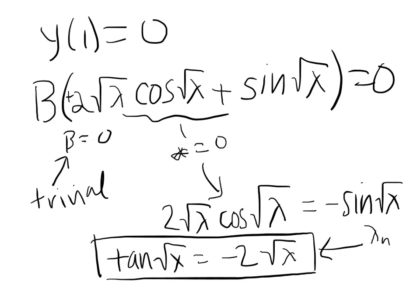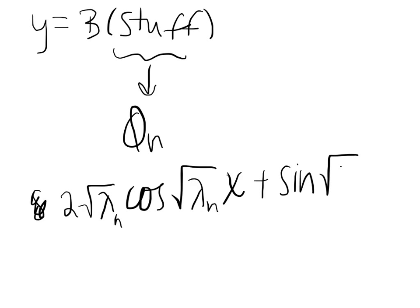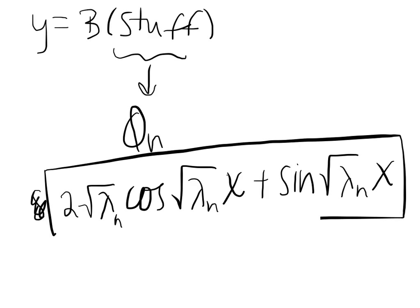So λ_n satisfies that condition. The second part is finding the eigenfunctions, which are really easy after this. We have the original function y = b times stuff, right? Those are your eigenfunctions. So now your eigenfunctions are 2·sqrt(λ_n)·cos(sqrt(λ_n)x) + sin(sqrt(λ_n)x). And we're done.